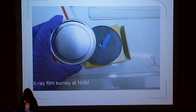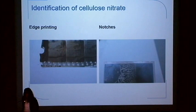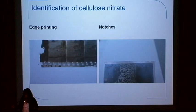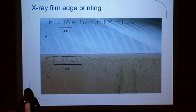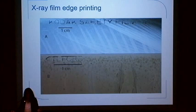The identification, however, proved a bit tricky. With photographic film and raw film it is very straightforward — you have the edge printing and notches to identify the film based on that. However, with x-ray films I didn't find any edge printing classifying them as nitrate, nor any notches, at least in the collections I surveyed. The only edge printing I did find was that of 'Safety,' which was not very helpful when trying to identify cellulose nitrate.